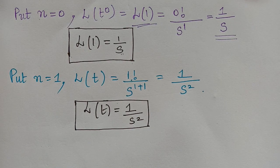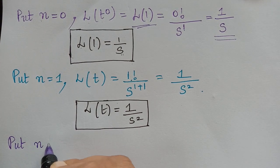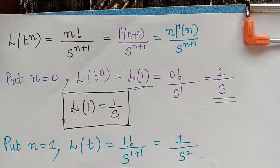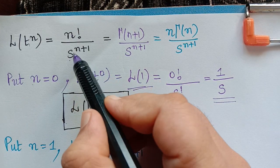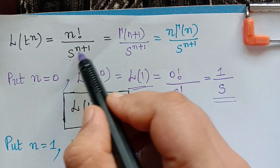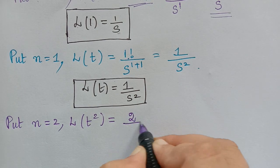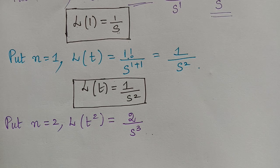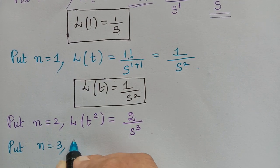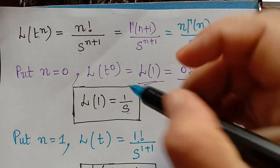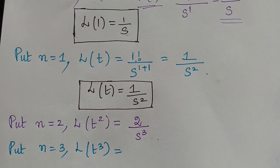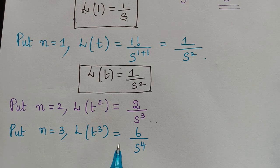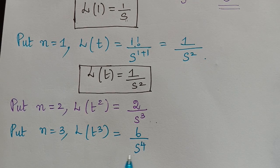By putting n equal to 2, the Laplace transform of t squared equals 2 factorial divided by s to the power 3. Since 2 factorial is 2 times 1 equals 2, we get 2 divided by s cubed. Similarly, putting n equal to 3, the Laplace transform of t cubed equals 3 factorial divided by s to the power 4. Since 3 factorial is 3 times 2 times 1 equals 6, we obtain 6 divided by s to the power 4.